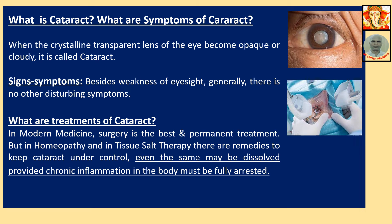What is cataract? When the crystalline transparent lens of the eye becomes opaque or cloudy, it is called cataract. Besides weakness of eyesight, there are generally no other disturbing symptoms. In modern medicine, surgery is the best and permanent treatment. But in homeopathy and tissue salt therapy, there are remedies to keep cataract under control and even dissolve it, provided chronic inflammation is fully arrested and the disease is in its primary stage — as I have seen personally.